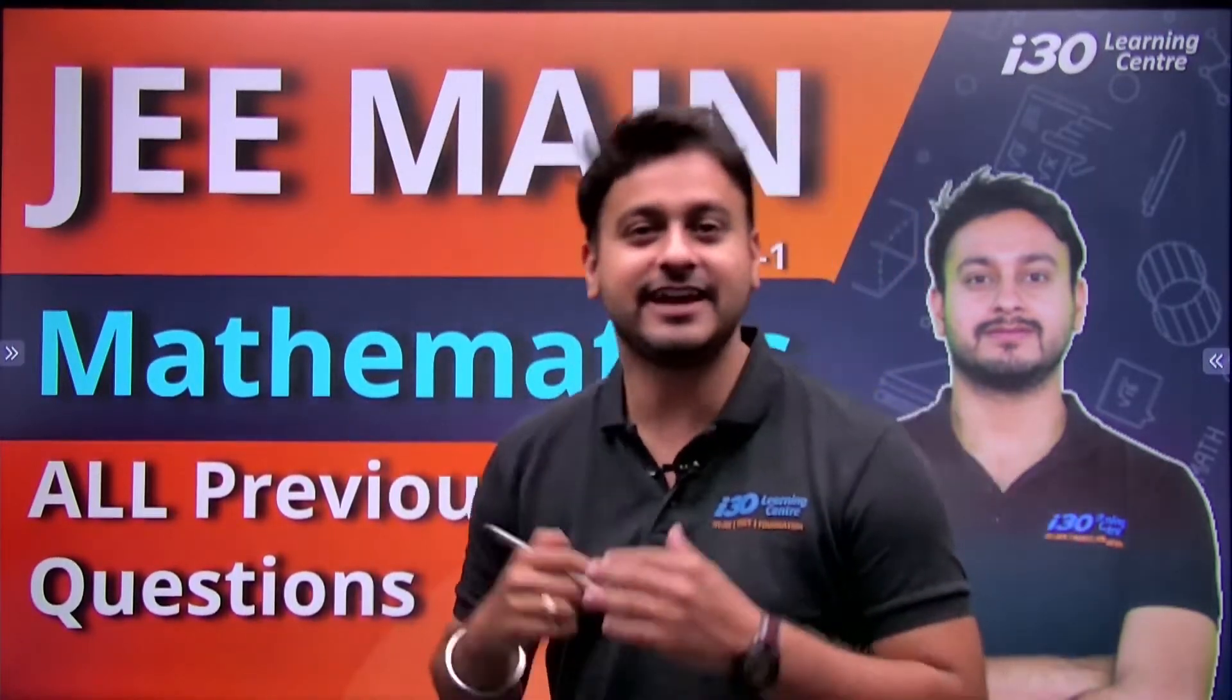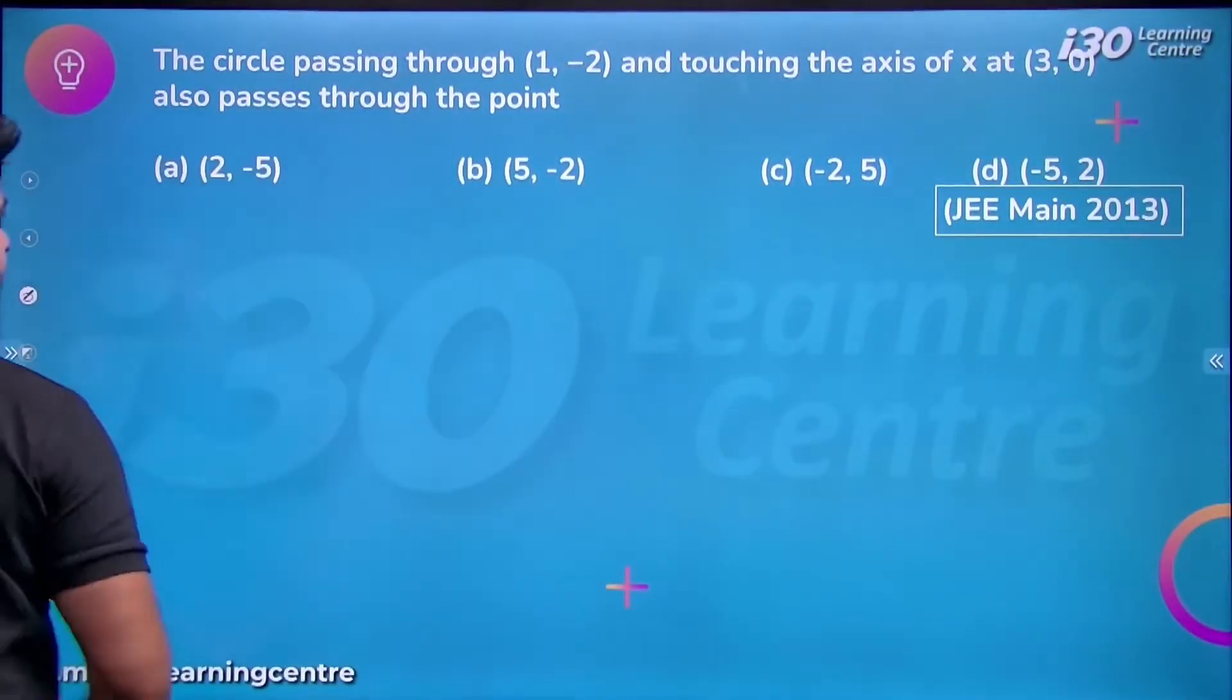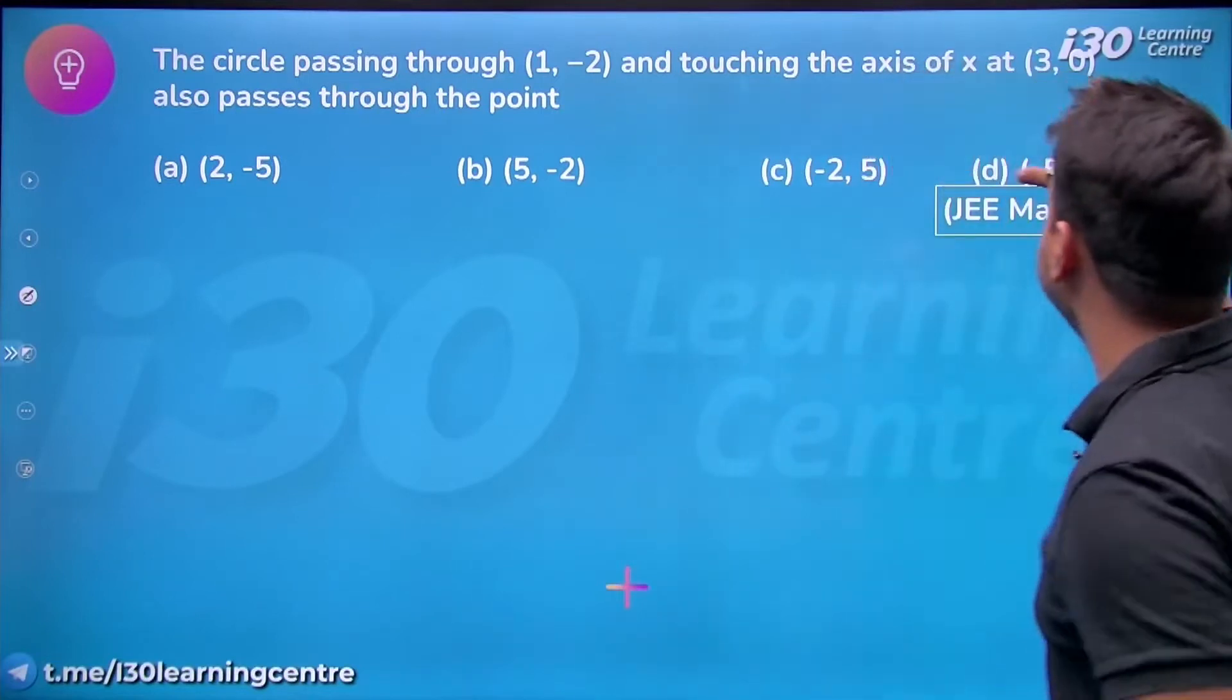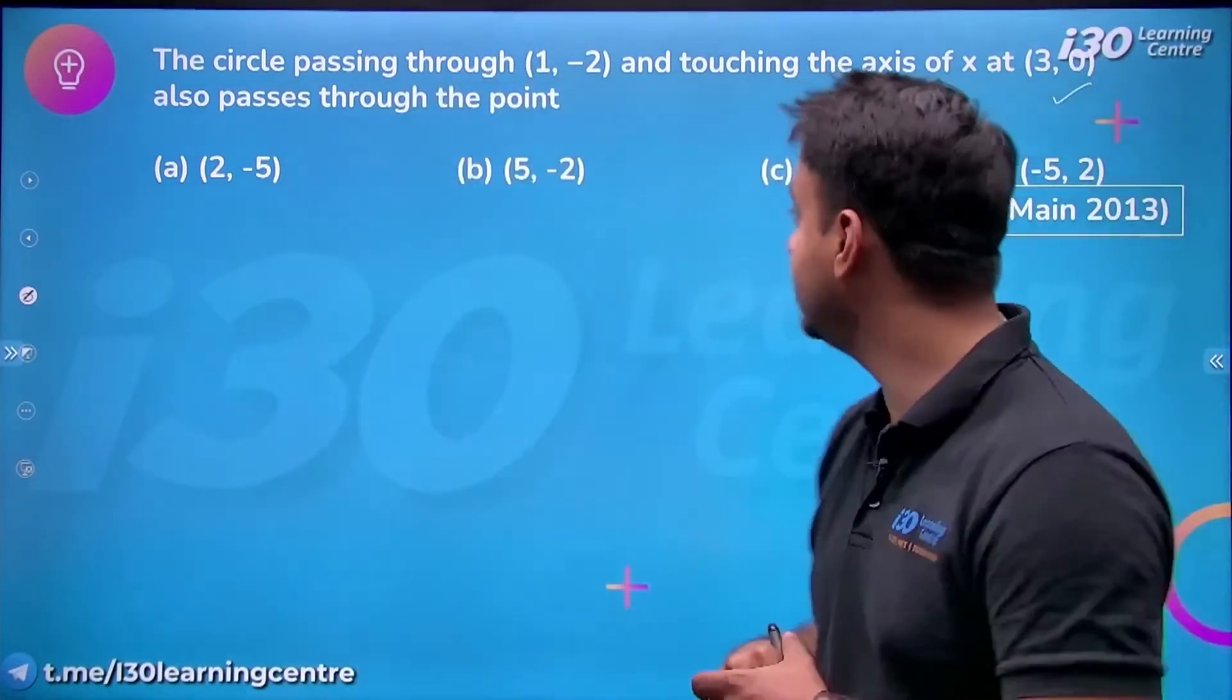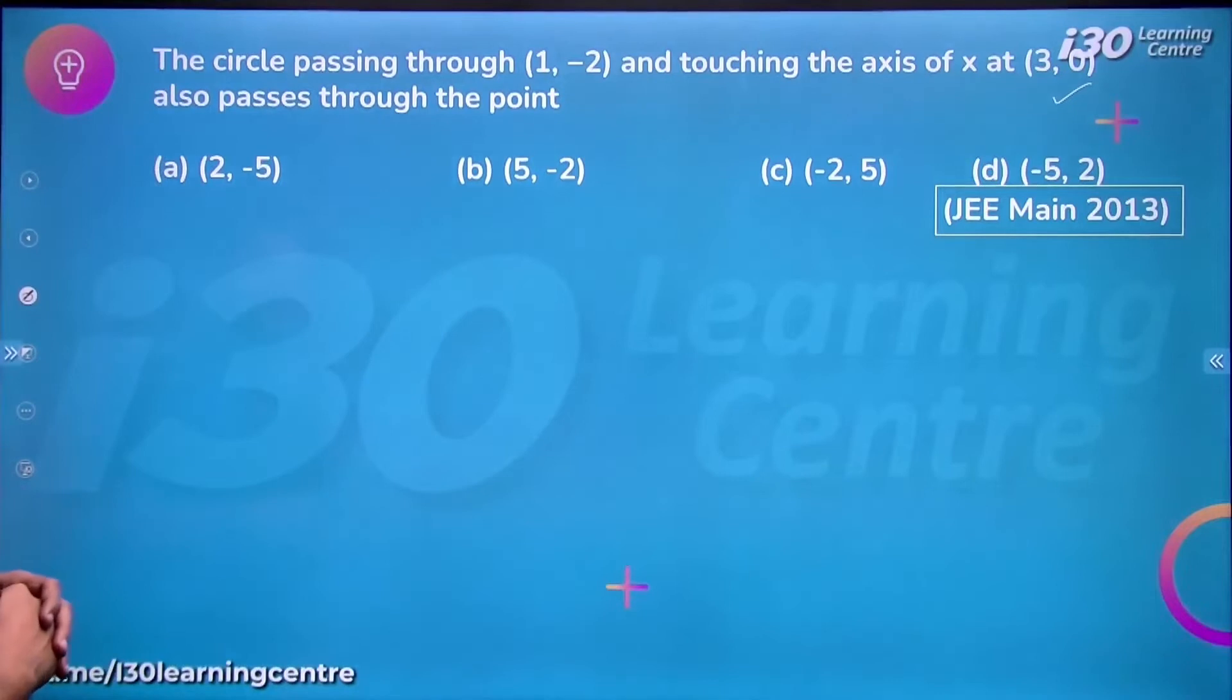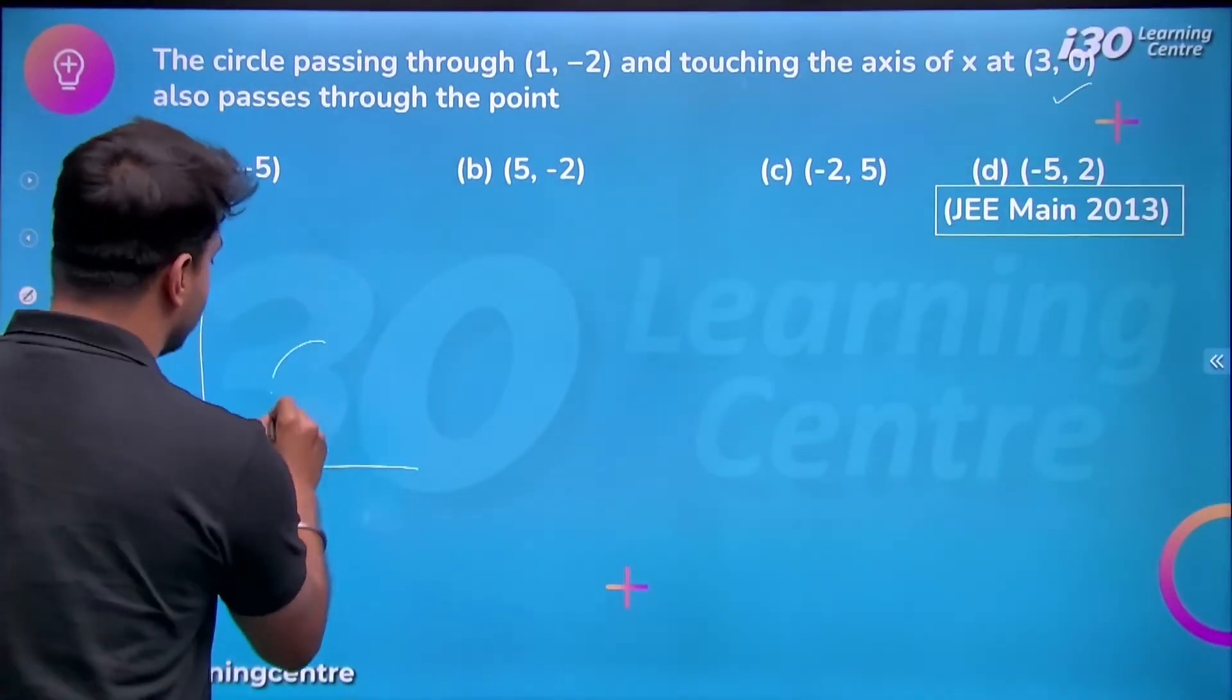Here is our first question and this is a very basic question. You are asked about a circle that passes through the point (1, -2) and it is touching the x-axis at the point (3, 0). We need to find which other point it passes through. It's a very basic question. If you look at this problem, when a circle touches the x-axis at point (3, 0), this is how we attempt it.